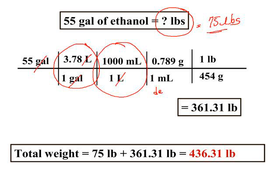This is the density of the ethanol and we're using it as a conversion factor. 1 milliliter is equivalent to 0.789 grams. This allows us to get to the grams unit which will allow us in the final conversion to get to pounds. So 1 milliliter is equivalent to 0.789 grams and then our final conversion converts grams to pounds.